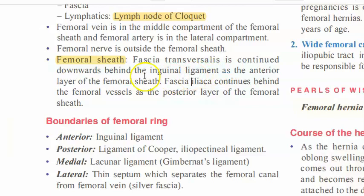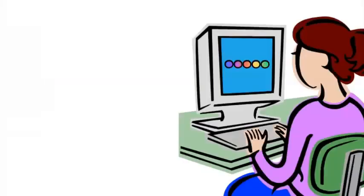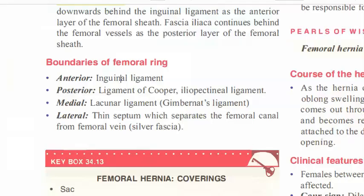The femoral sheath is also important. The fascia transversalis continues downwards behind the inguinal ligament as the anterior layer of the femoral sheath. The iliaca fascia continues behind the femoral vessels as the posterior layer of the femoral sheath.